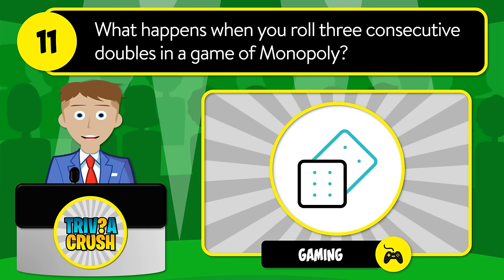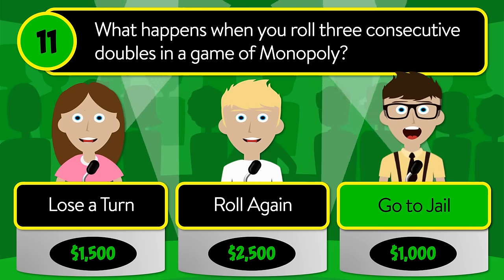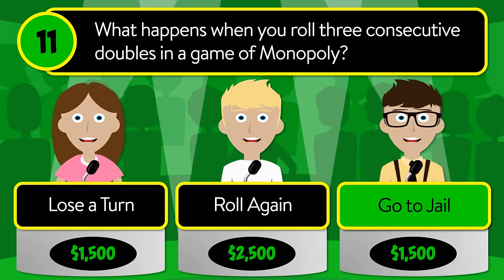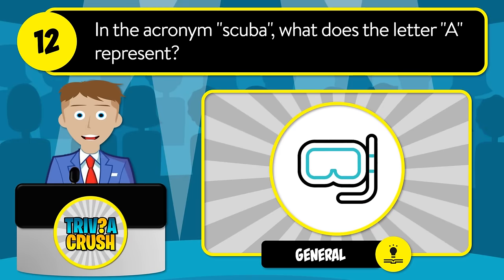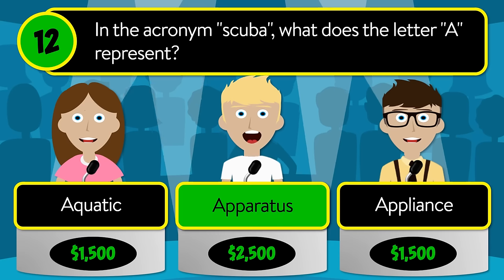Question number eleven: what happens when you roll three consecutive doubles in a game of Monopoly? Is it lose a turn, roll again, or go to jail? The correct answer is go to jail. Question number twelve: in the acronym SCUBA, what does the letter A represent? Is it aquatic, apparatus, or appliance?